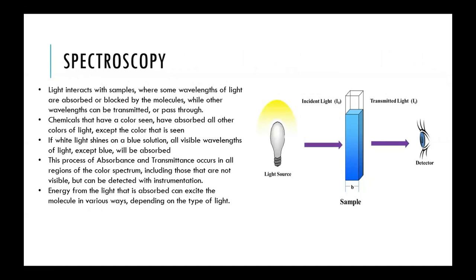In spectroscopy and in spectrophotometers, we look at light that's transmitted and light that's absorbed. Transmitted light is just like it sounds — there's a light source and the chemical solution, the light passes through the solution, and some of it, not all of it, is transmitted through to the other side.